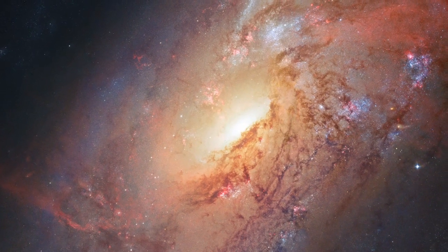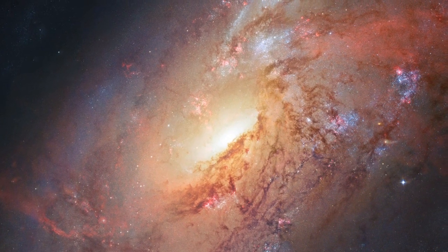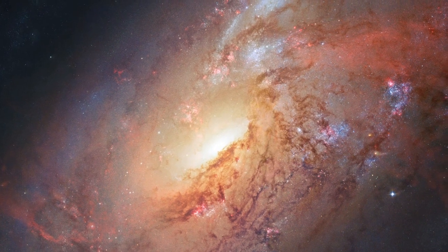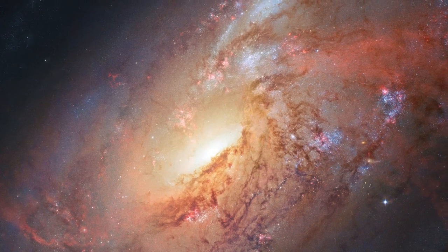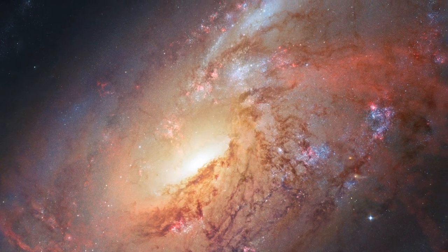Some of the data for this image of Messier 106 were provided by amateur astronomer Robert Gendler. Together with Hubble, these data allow us to visualize the galaxy's chaotic center and mysterious structure better than ever before.